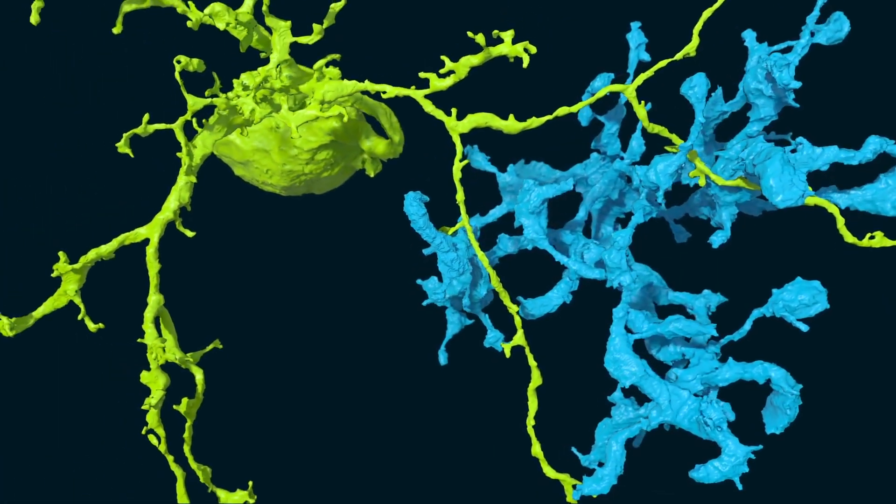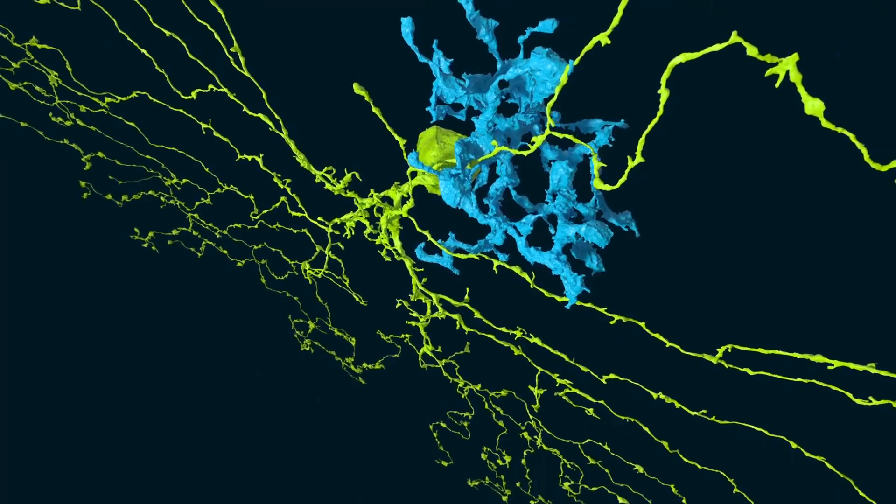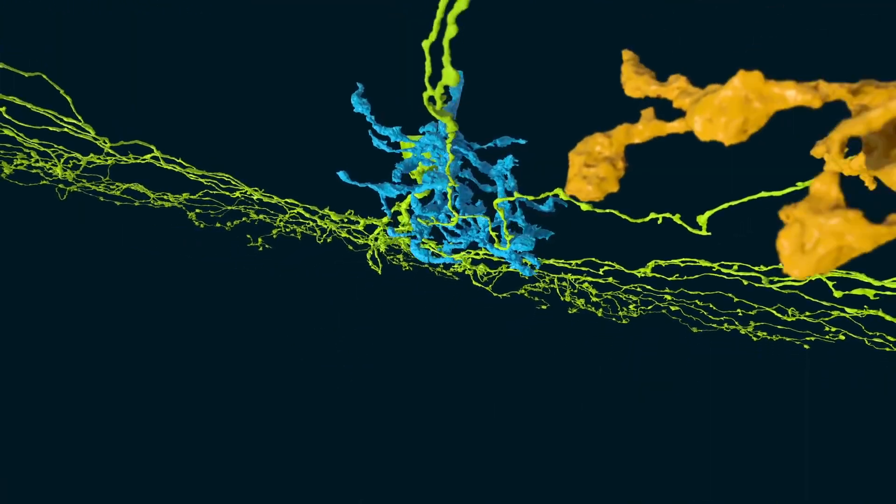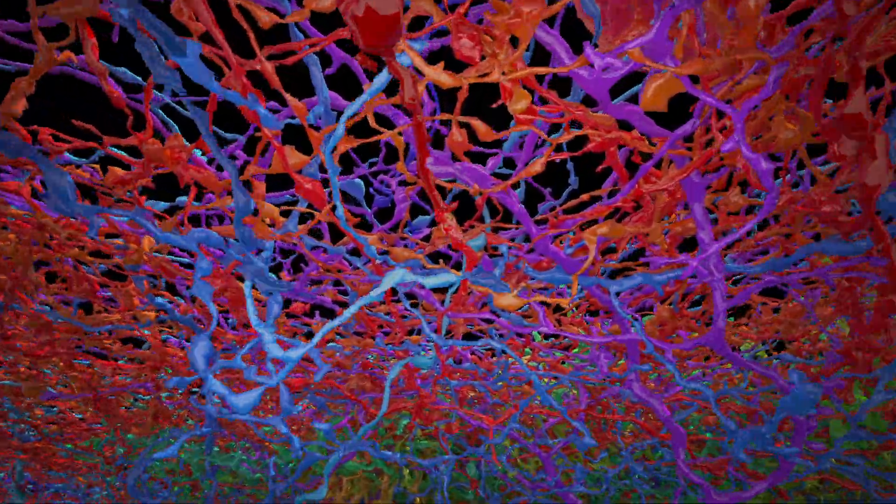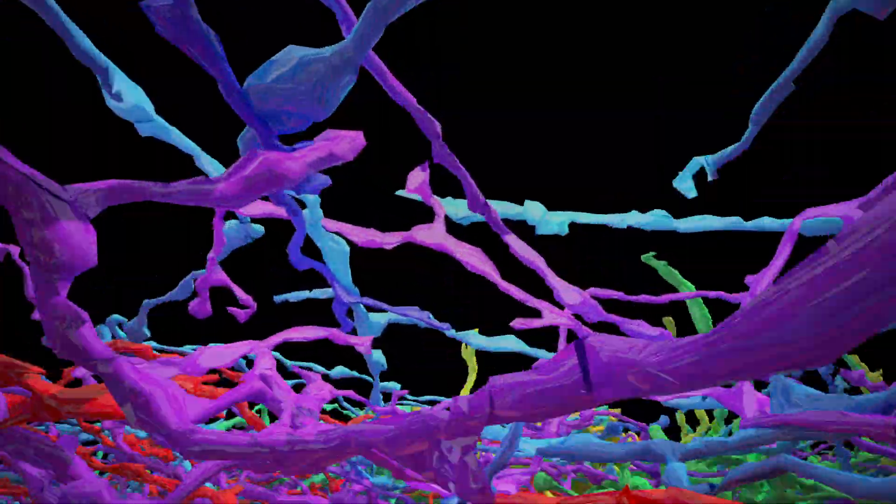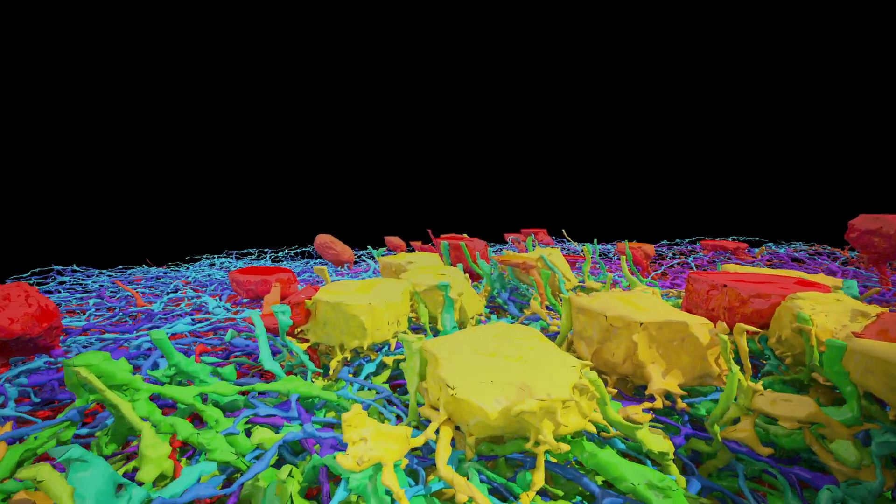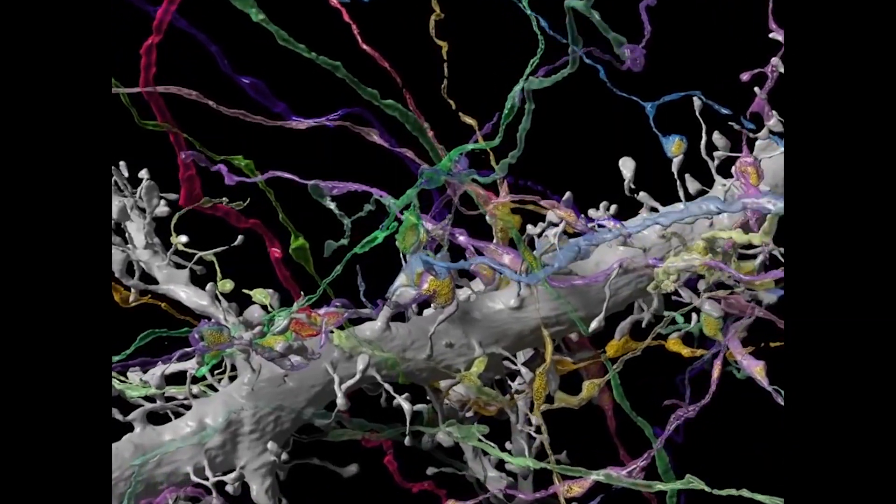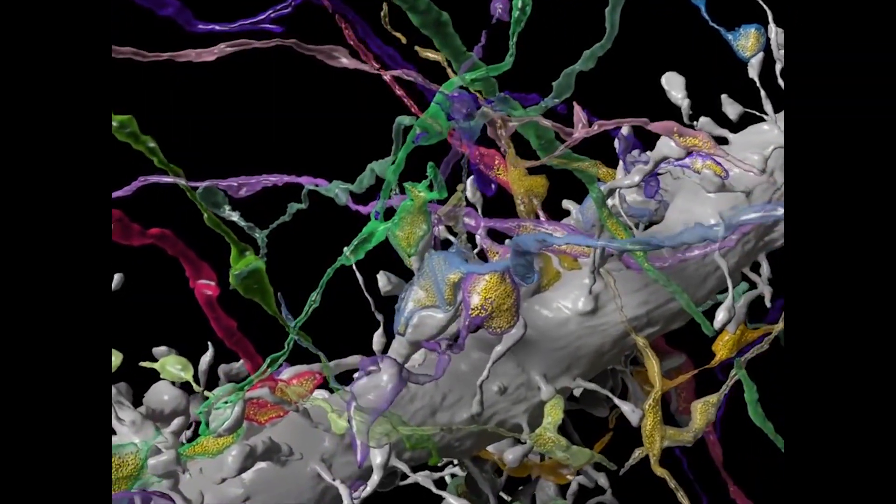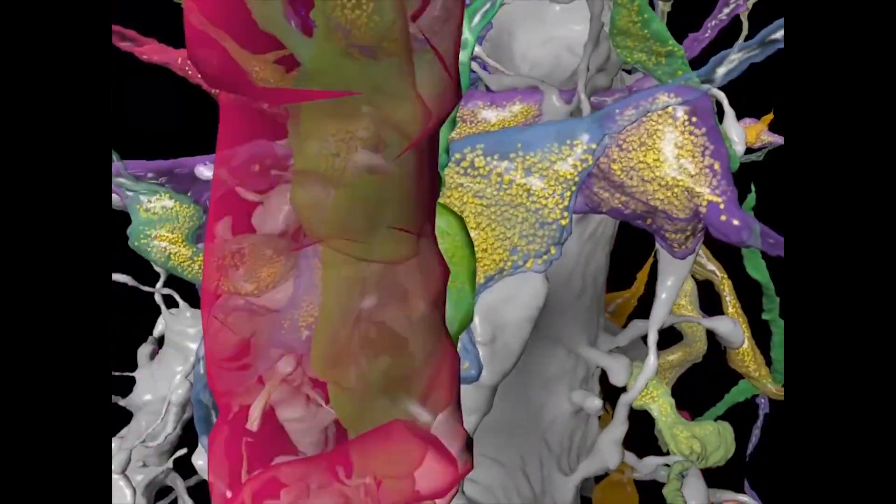And what compounds the problem with the diversity of cell types in the brain is the fact that these cells are interconnected in a vast and very complicated wiring diagram because the cells, rather than being little circles or cubes or rectangles, actually look more like spiders with very, very long wires that connect them to cells elsewhere. And to understand the function of the brain, you really have to understand how they're connected.